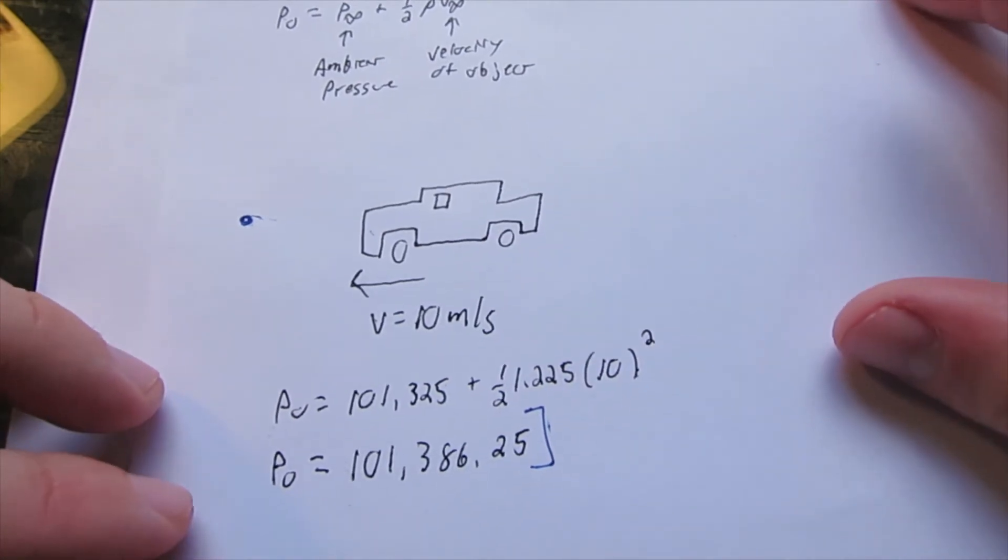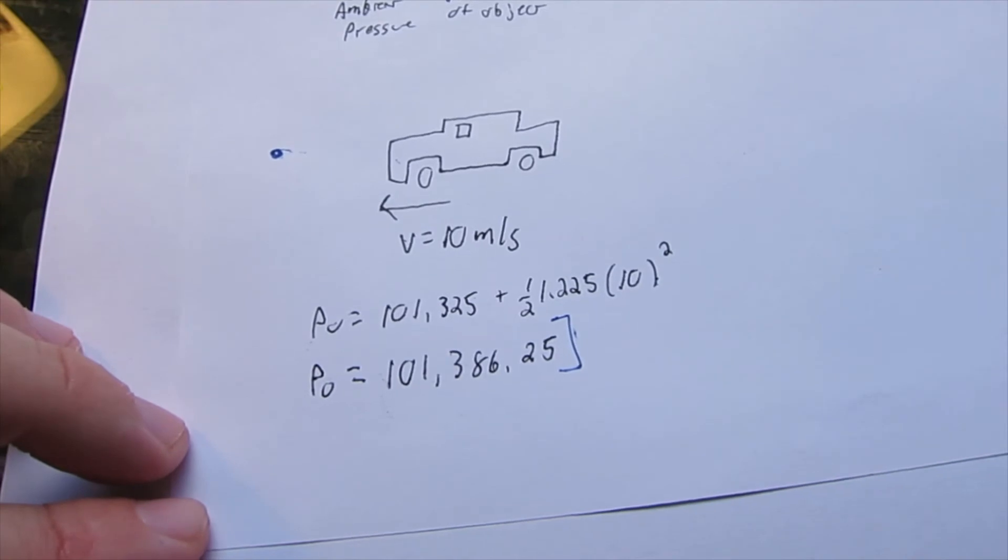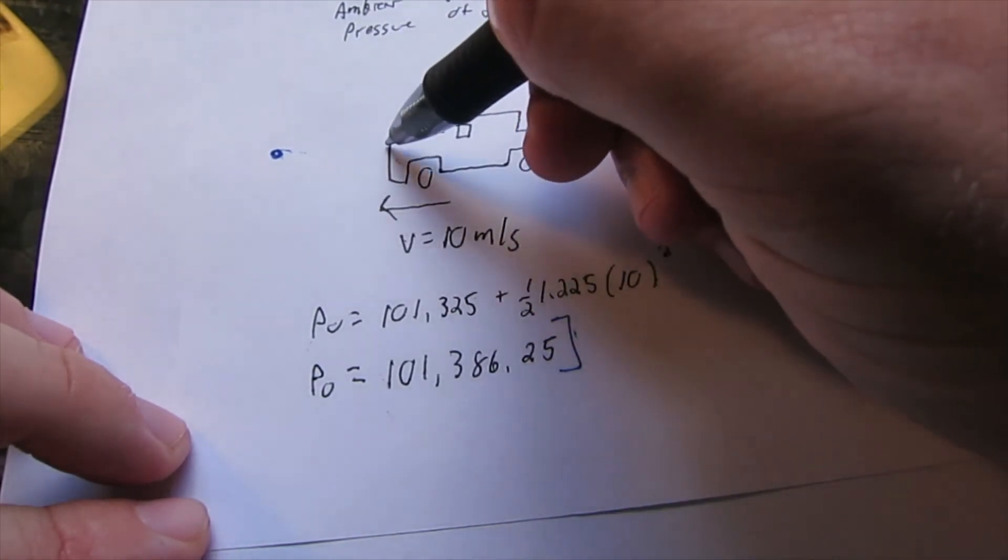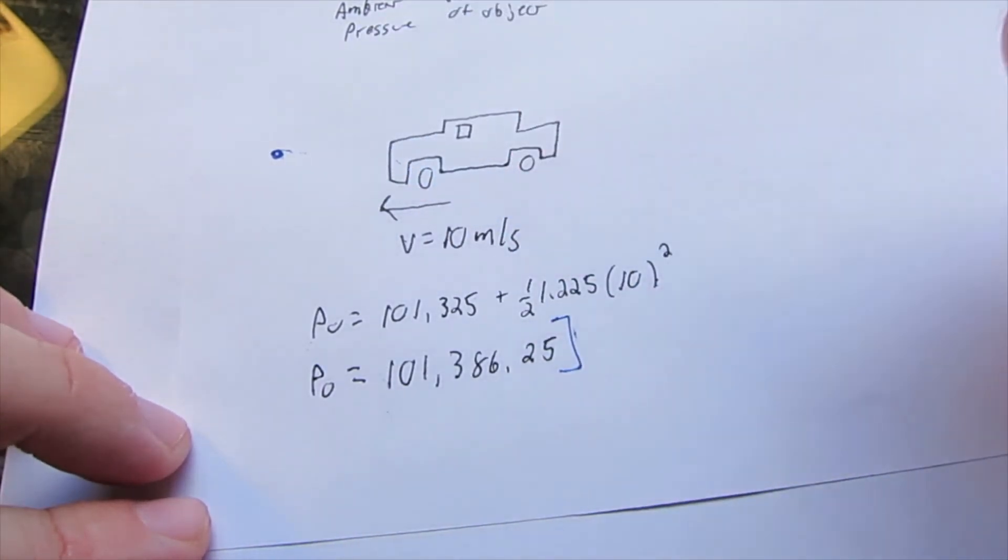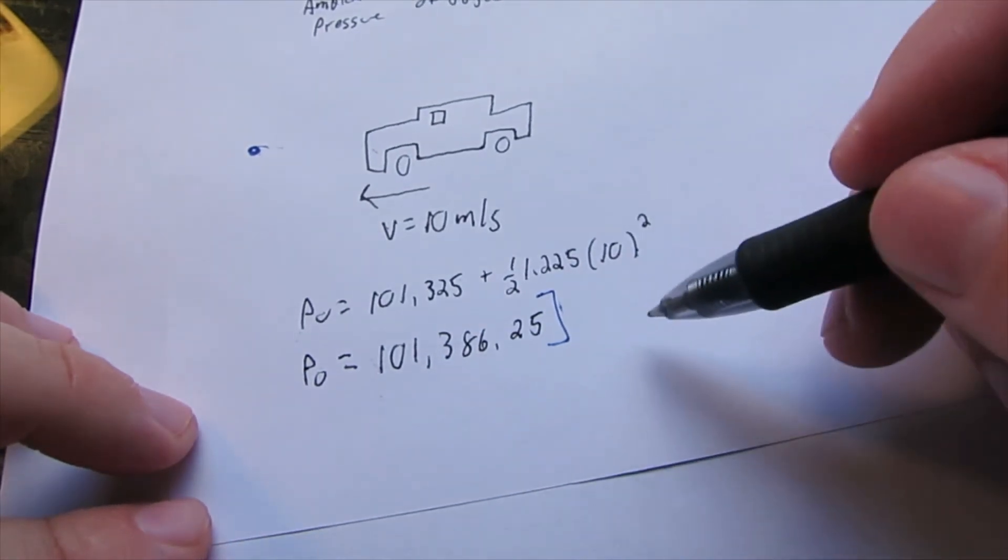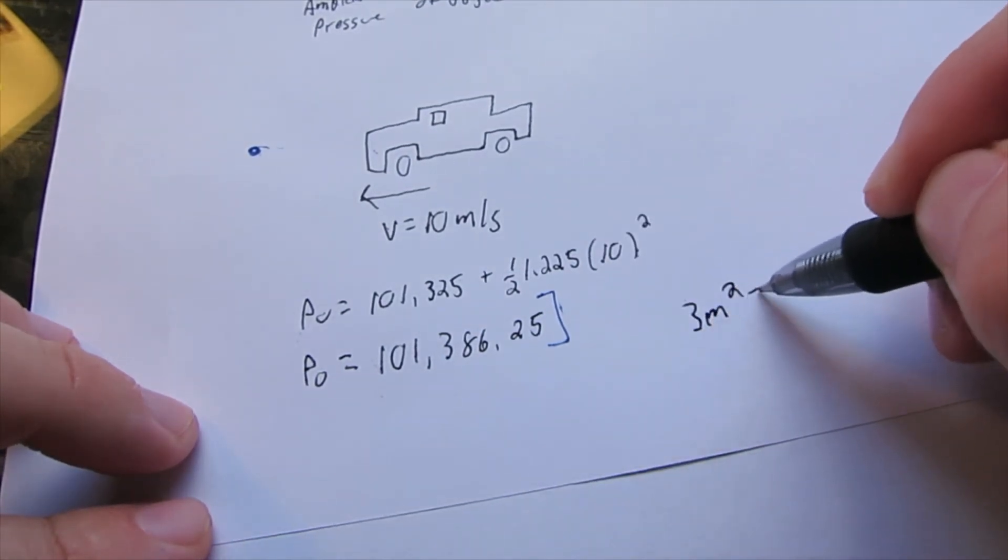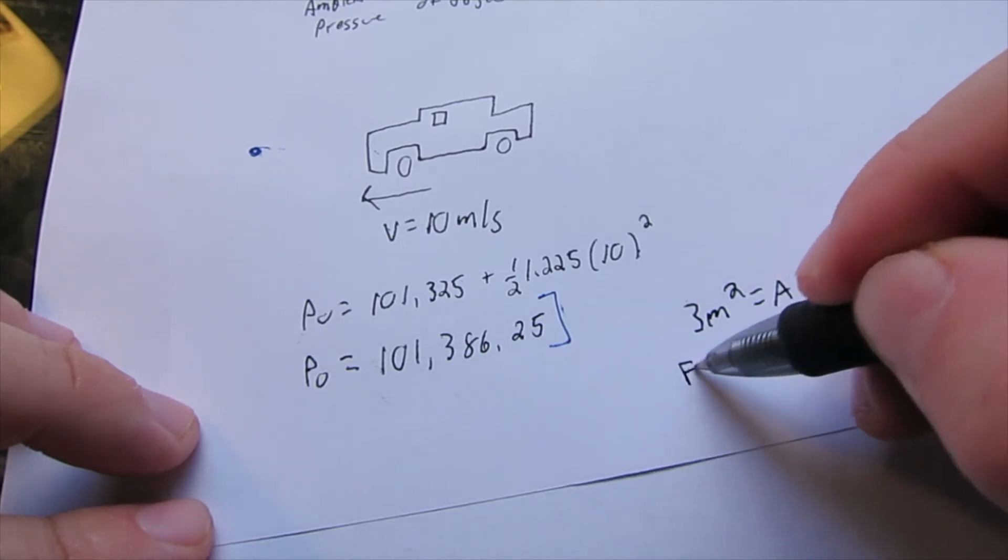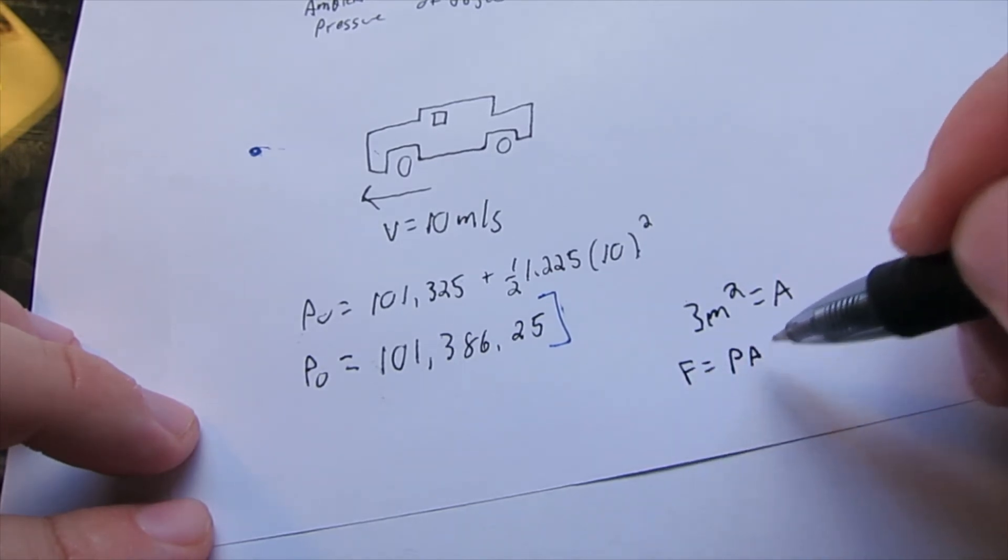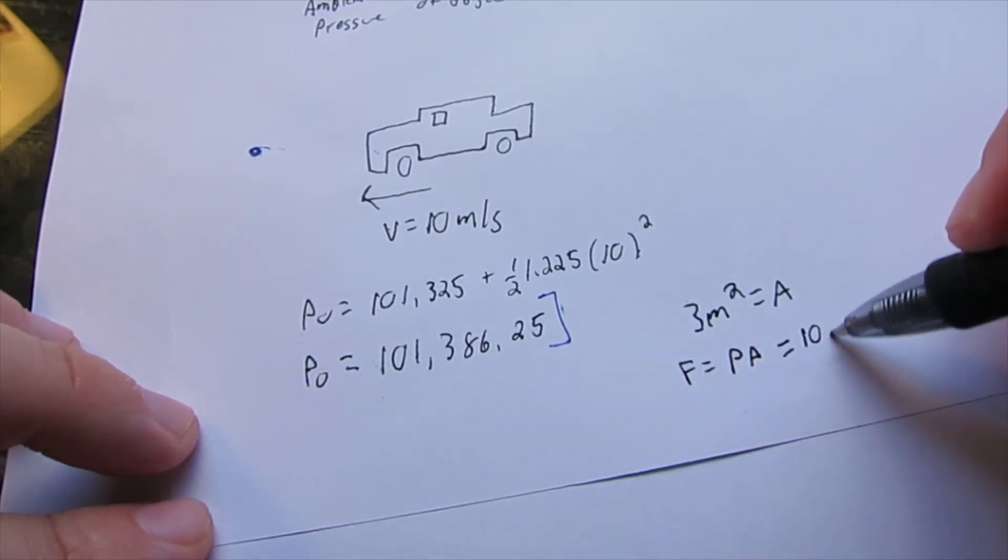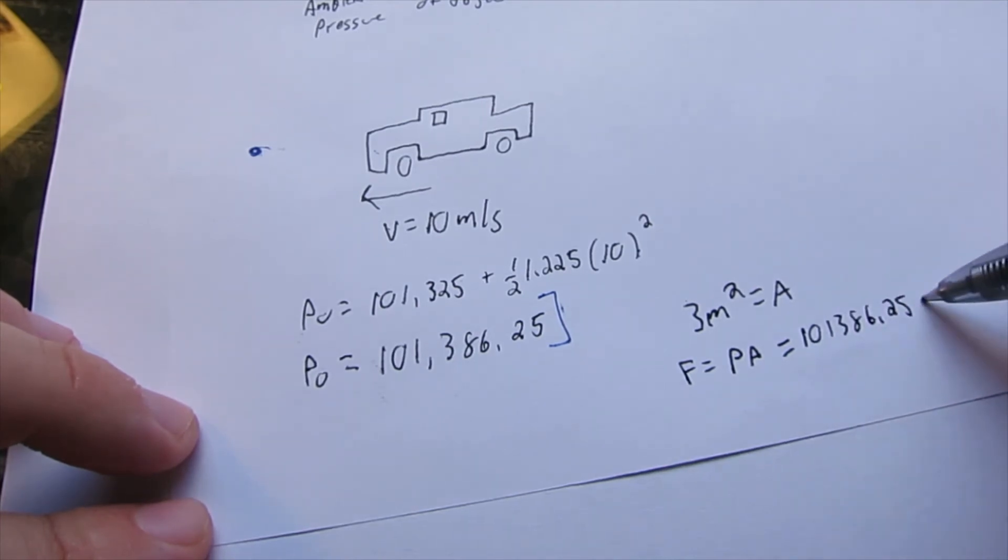We can also use this to calculate the force on this car. Let's say the area of the front of this car is 3 meters squared. The force equals pressure times area, which is 101,386.25 times 3.